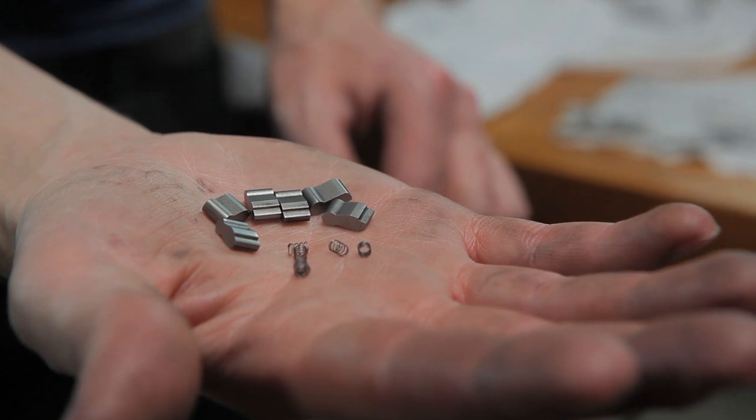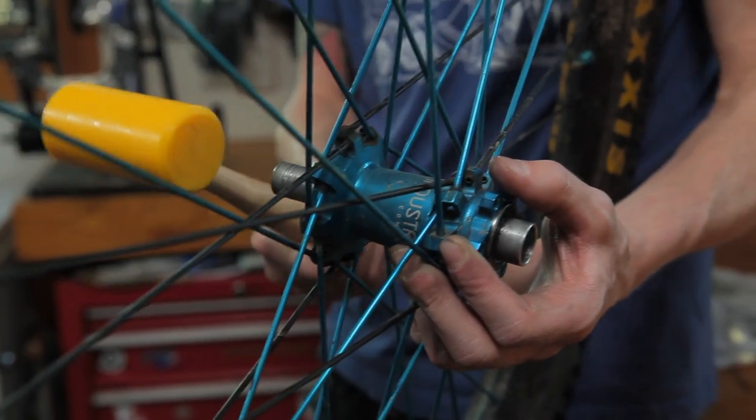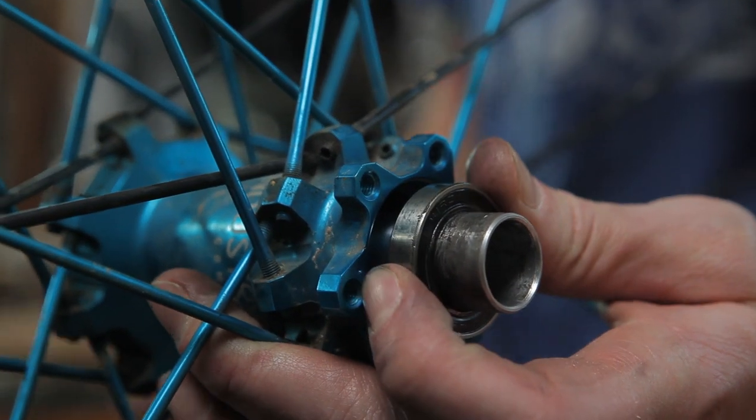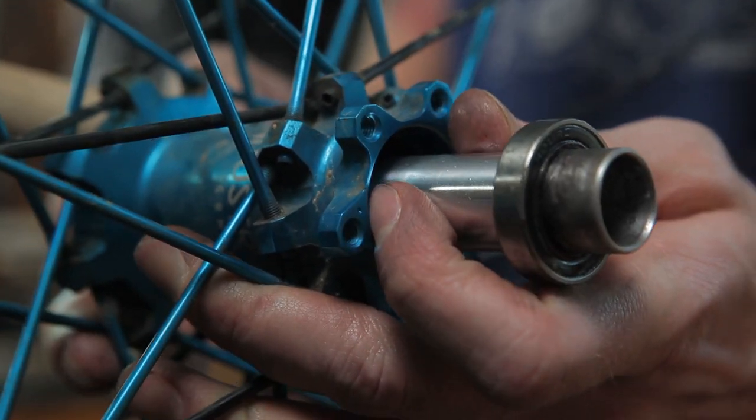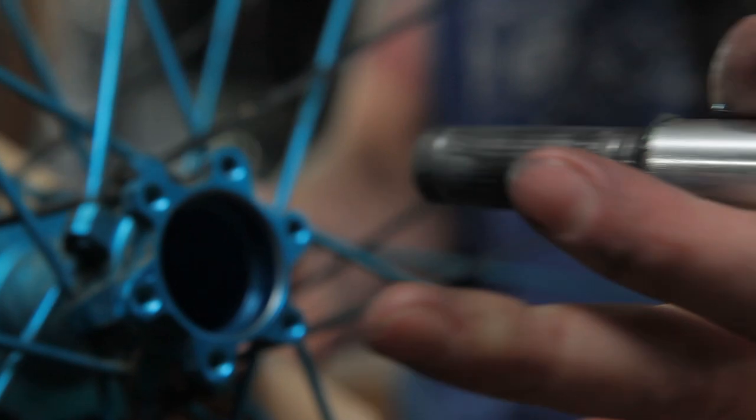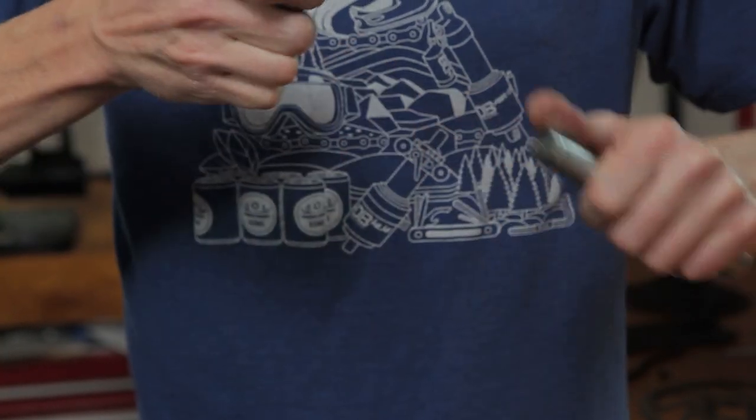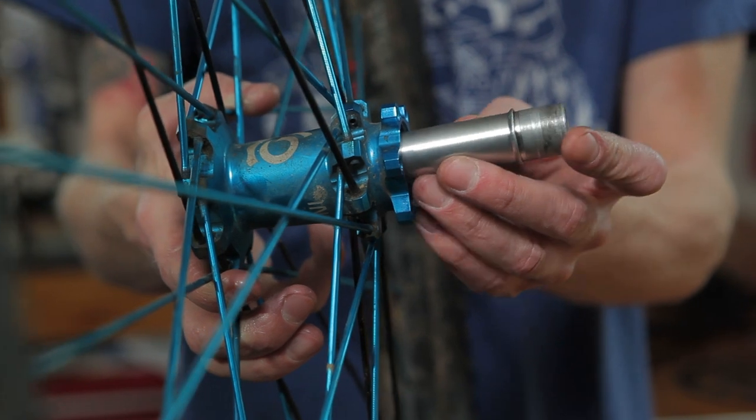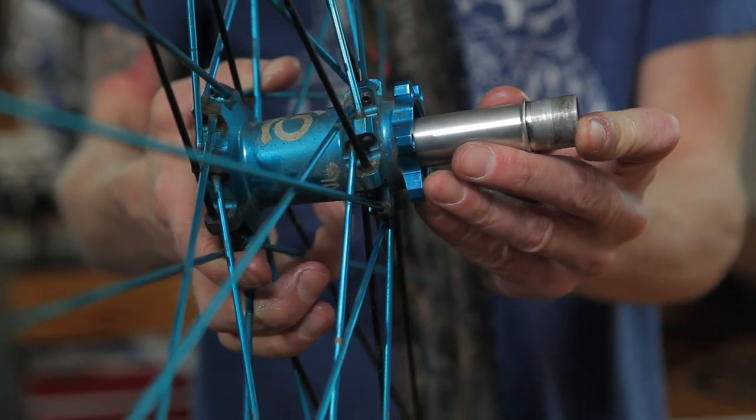For hub shell bearing removal, use the wheel's axle to remove the bearings. Start with your drive side. Strike the axle directly with your mallet to push the disc side bearing out. Reinsert the axle and strike it on the disc side to remove the drive side bearing.